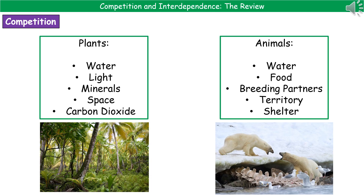Let's think about what animals and plants will actually compete for. If we think about plants first, they're going to be competing for all those things they need to survive that are potentially in limited supply. So that would be water, light, the minerals that we find in the soil, the actual space to allow them to grow, and carbon dioxide. All of those are examples of things that plants will compete for.